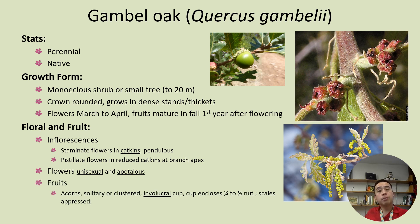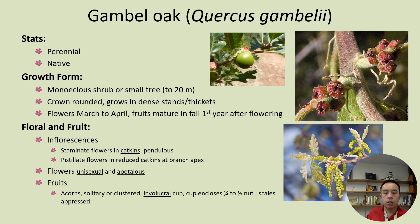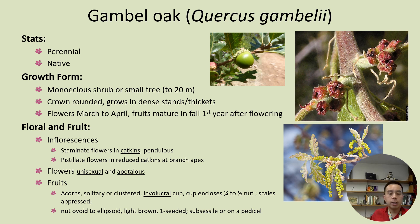In terms of its fruits, it typically produces acorns, which many of you are familiar with. They are often solitary or clustered. Typically it has an involucral cup, which is essentially a whorl or rosette around the base that closes around the nut, with scales appressed onto the surface. The nut itself is often ovoid to ellipsoid in shape and can go from green to light brown in color. Often a single acorn contains a single seed, and the fruits are often subsessile or on a very small pedestal.